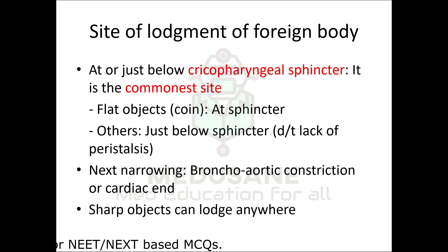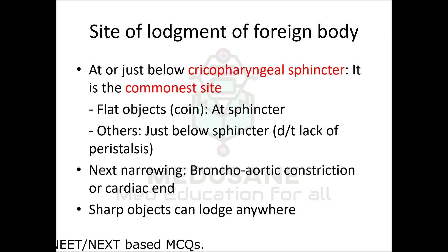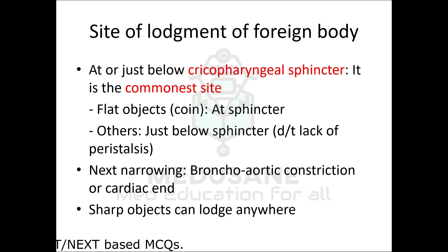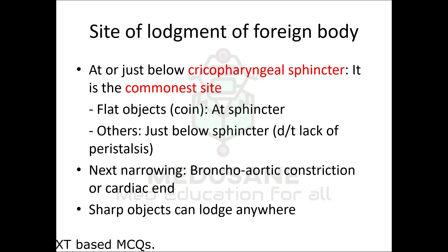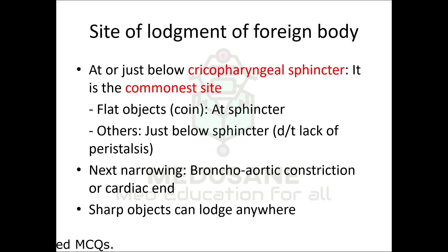Regarding the site of lodgement — there are four normal constrictions in the esophagus. The first is at the cricopharyngeal sphincter, the second is at the arch of the aorta, the third is at the bifurcation of the trachea, and the fourth is at the cardioesophageal junction. The corresponding distances from the upper incisor are 15 cm, 25 cm, 27 cm, and 40 cm, corresponding to vertebral levels C6, T4, T5, and T10 respectively.